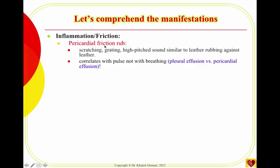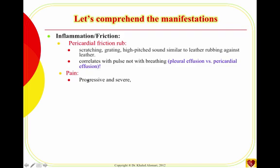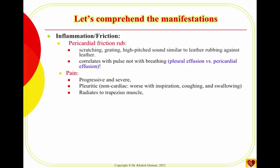To differentiate pericardial friction rub from pleural effusion, it has to do with the pulse. The friction is caused during systole when there's a pulse — whenever the ventricles are contracting. So it has nothing to do with breathing, though it gets worse with breathing. The timing of the friction rub, when you hear it using the diaphragm of the stethoscope, correlates with the pulse. The pain correlates with respiration, but the pericardial friction rub correlates with the pulse.